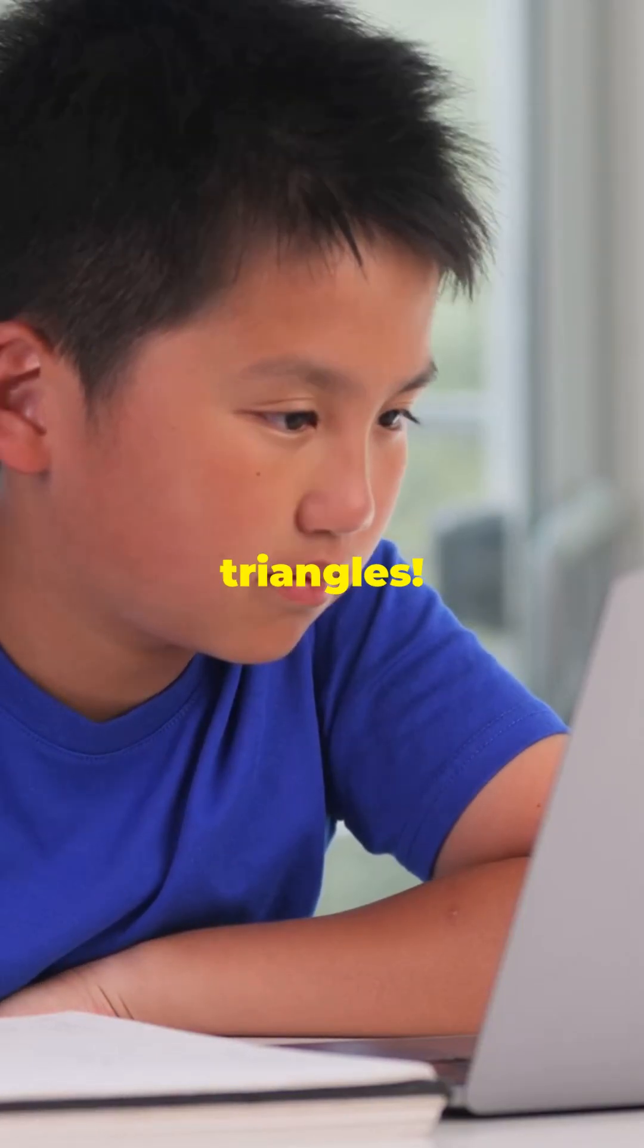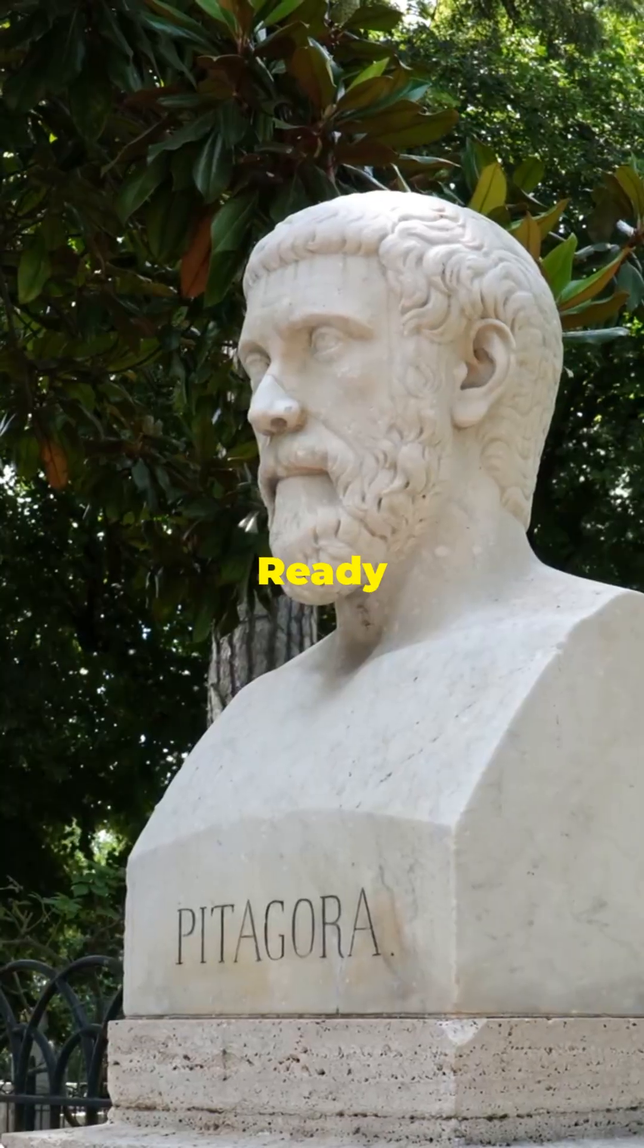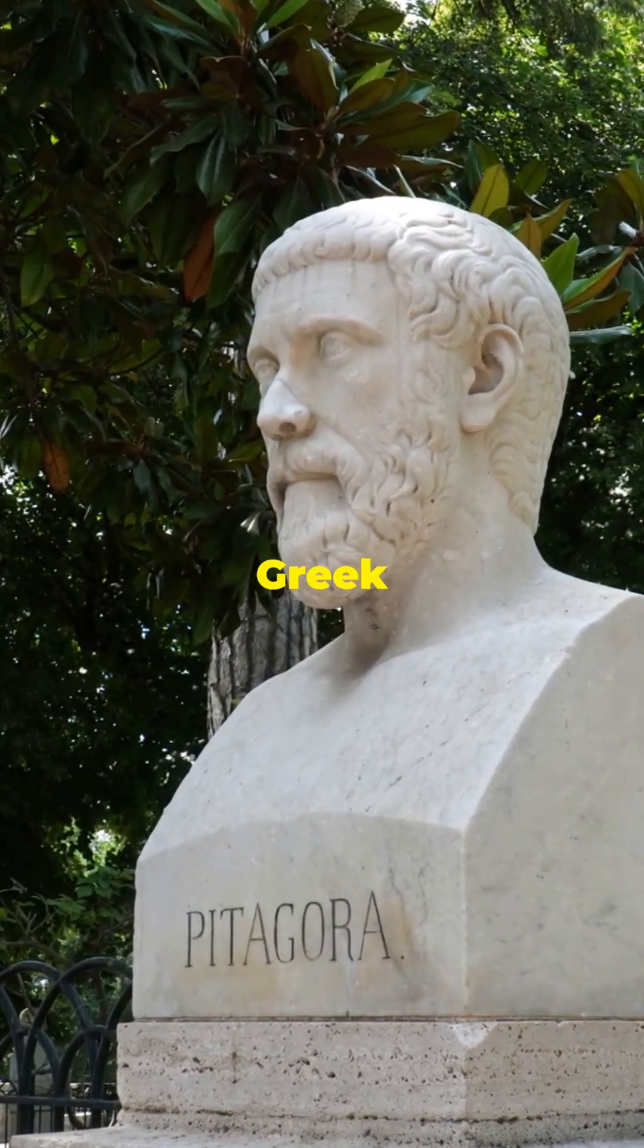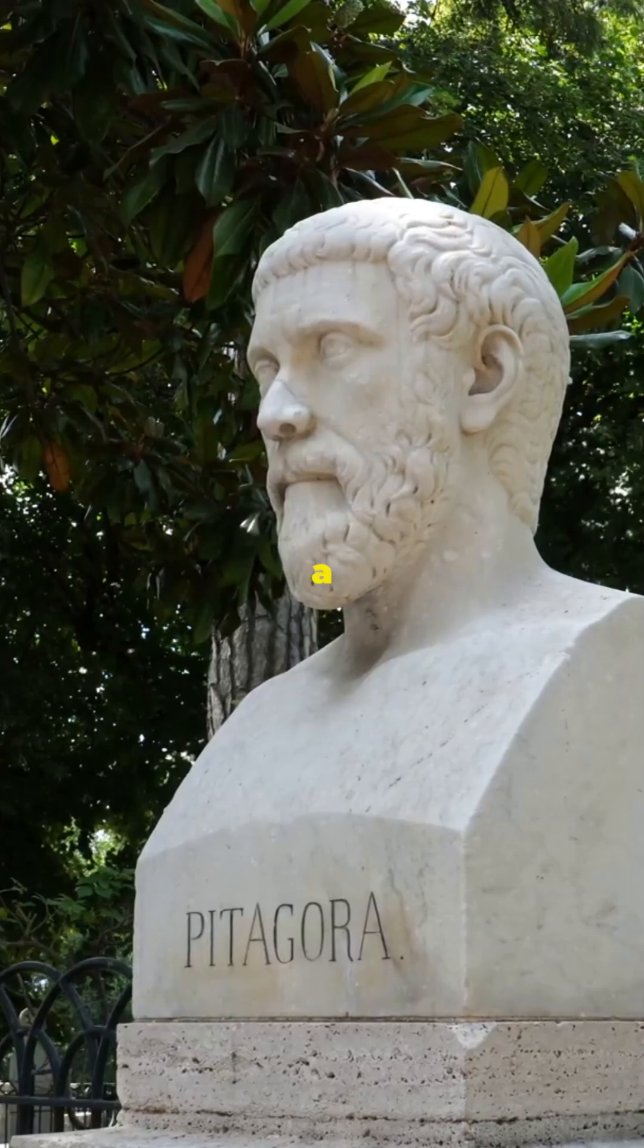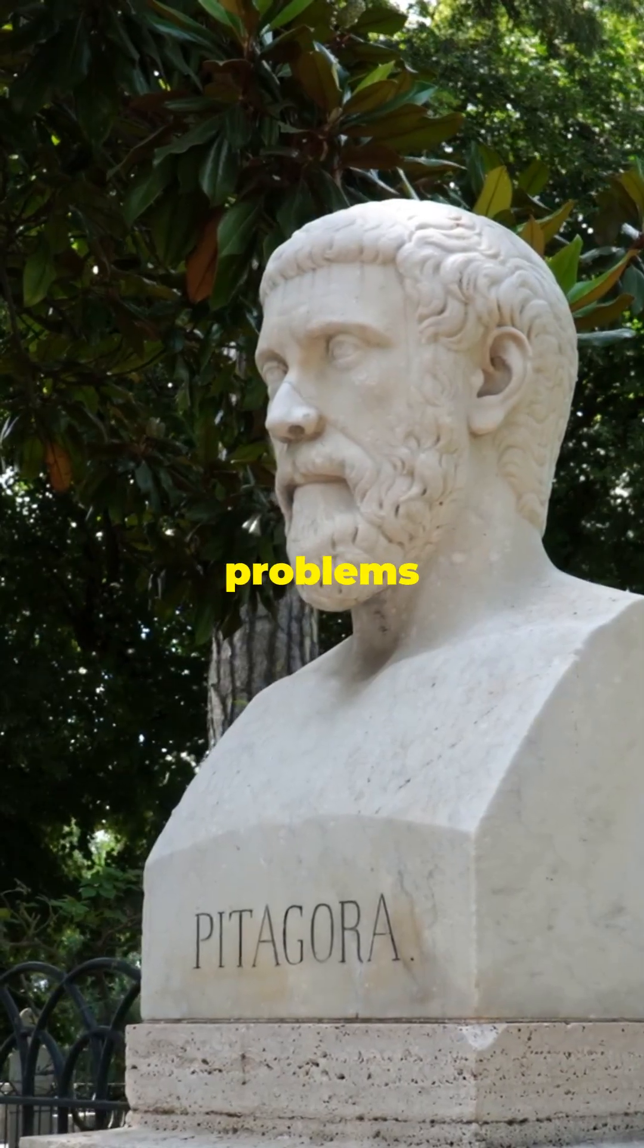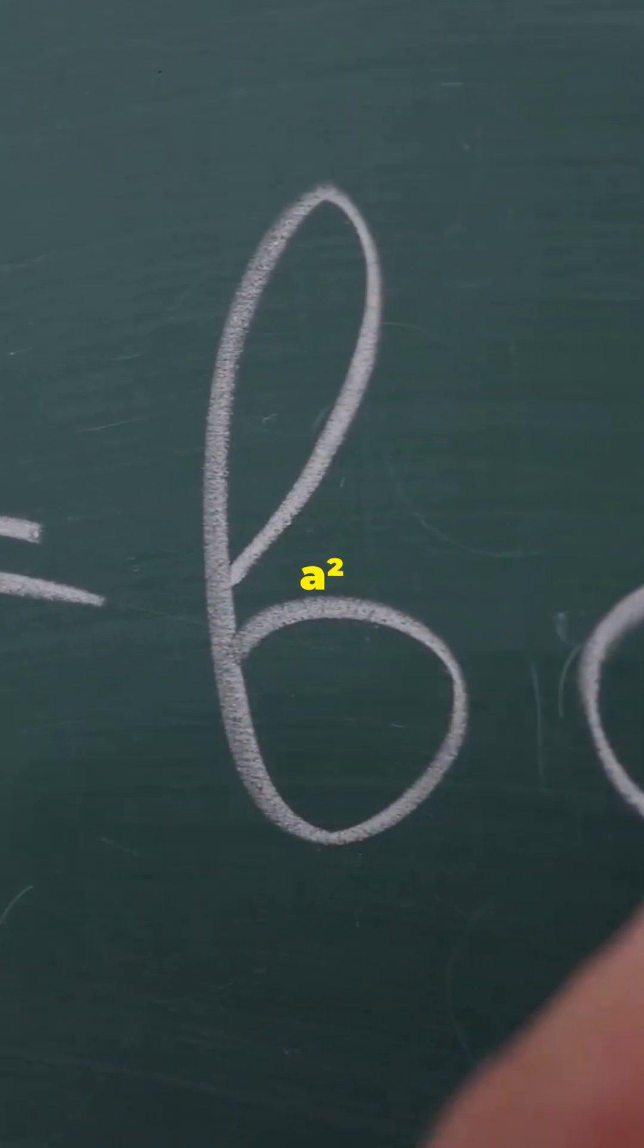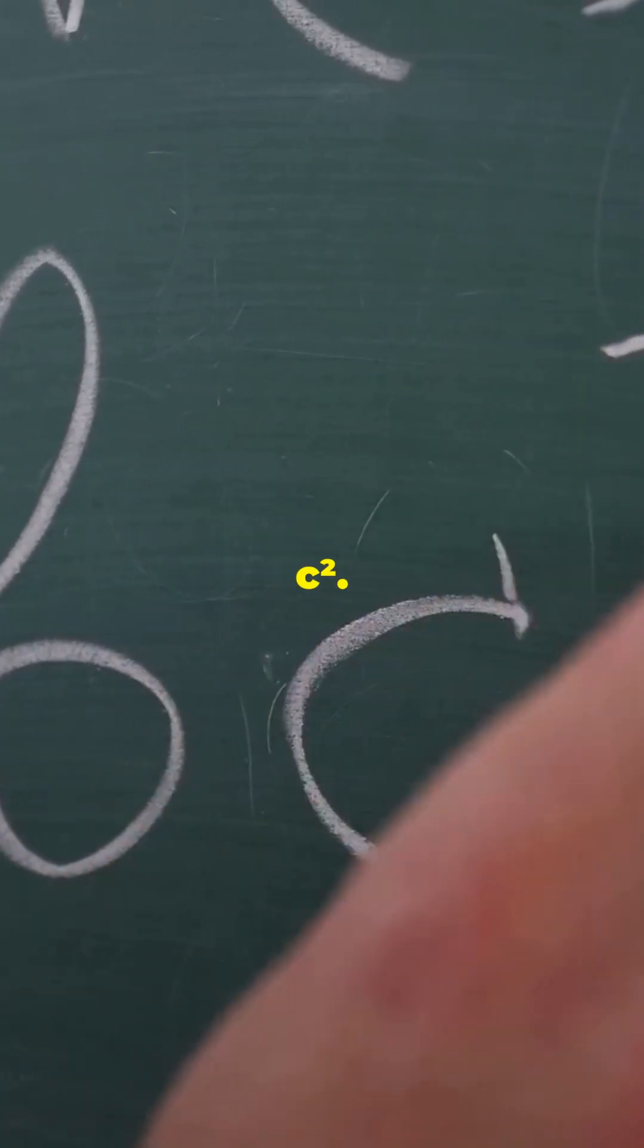You need to watch this if you struggle with triangles. Pythagoras found a formula that makes it easy. Ready to crack the code? Over 2,000 years ago, a brilliant Greek mathematician named Pythagoras made a discovery that still helps us solve problems today. It's all about right-angled triangles. Here's the magic formula: A² + B² = C².